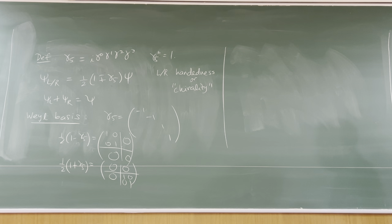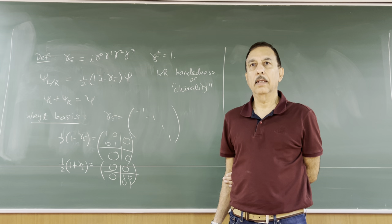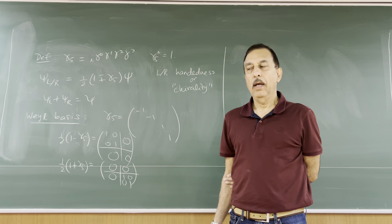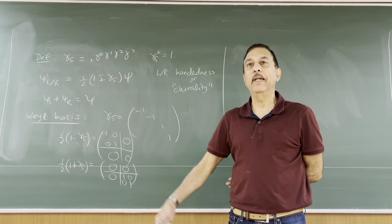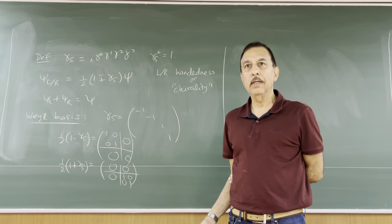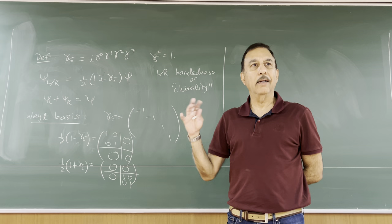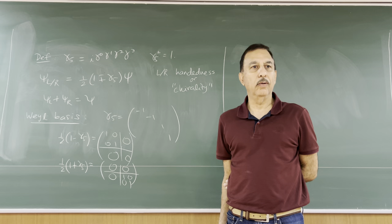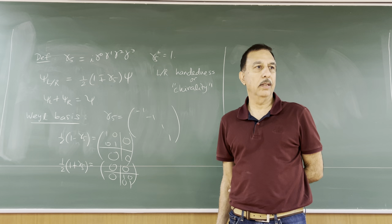Choosing a basis is the same as choosing a representation of the gamma matrices. A representation of the Clifford algebra — the name for the gamma matrix algebra — is not unique; you can have many realizations as numerical matrices. The theorem is that whatever you do in physics you will get the same answer regardless of which representation you use. In some representations certain properties are more transparent, and in others different properties may be more transparent.